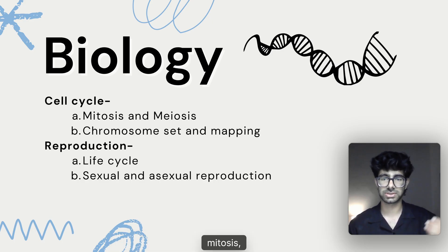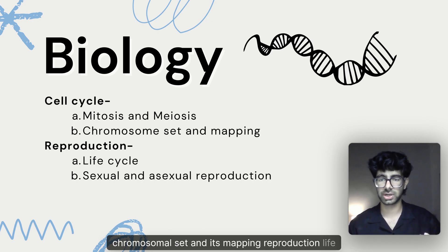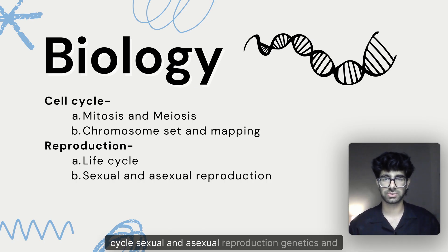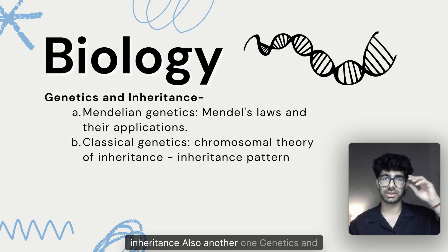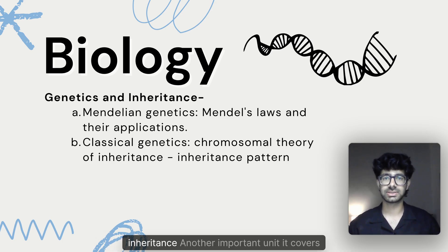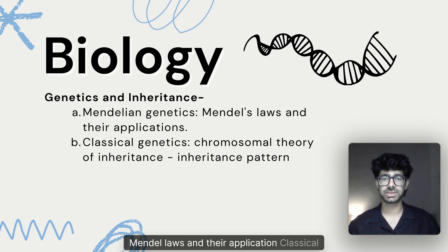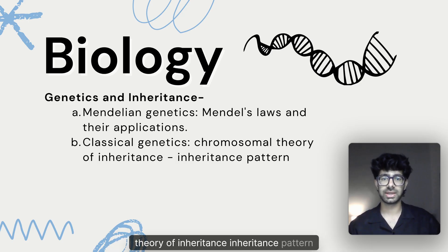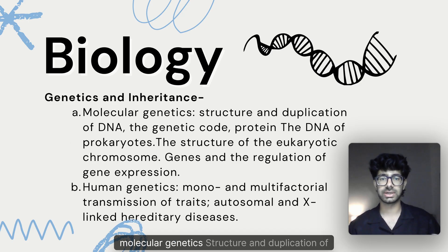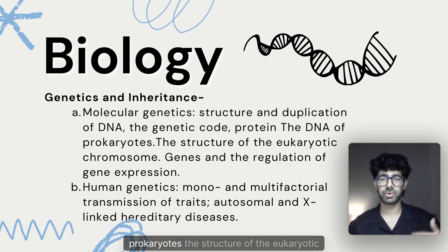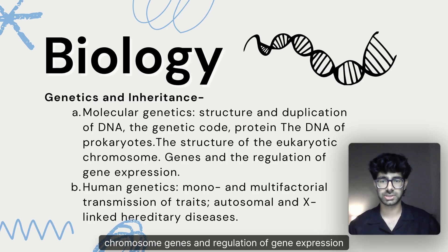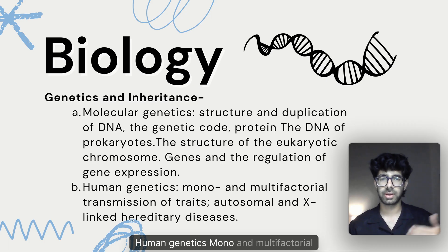The cell cycle covers mitosis, meiosis, chromosomal set and its mapping, reproduction life cycle, and sexual and asexual reproduction. Genetics and inheritance is another important unit covering Mendelian genetics, Mendel's laws and their application, classical genetics, chromosomal theory of inheritance, inheritance patterns, and molecular genetics — including the structure and duplication of DNA, the genetic code, and protein synthesis. It also covers the DNA of prokaryotes, the structure of the eukaryotic chromosome, genes, and regulation of gene expression.